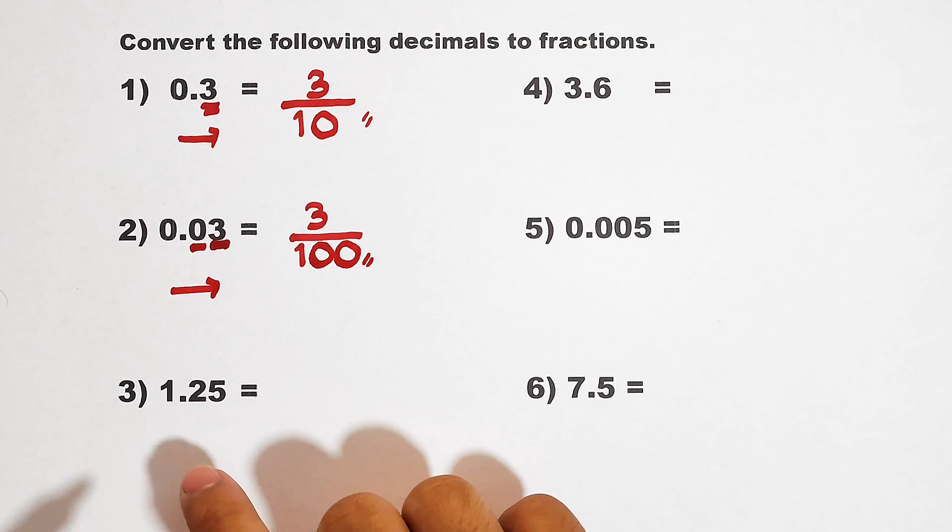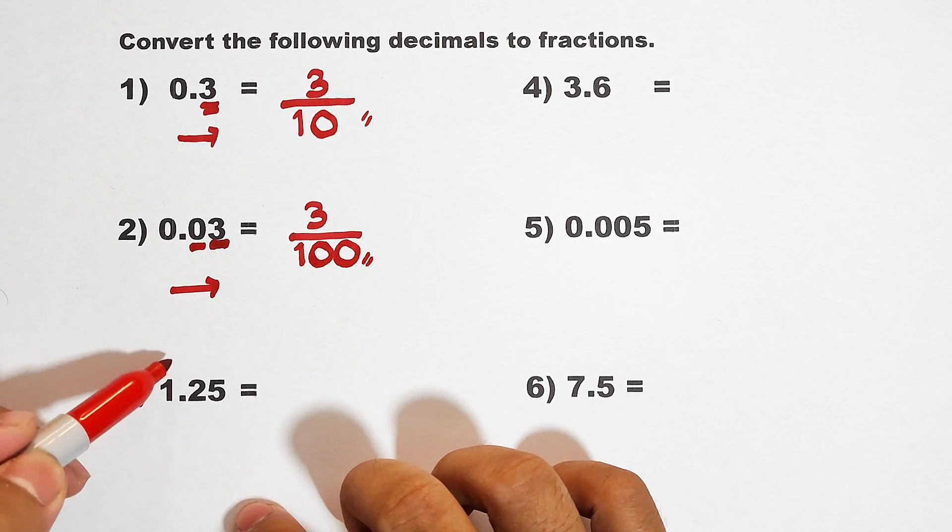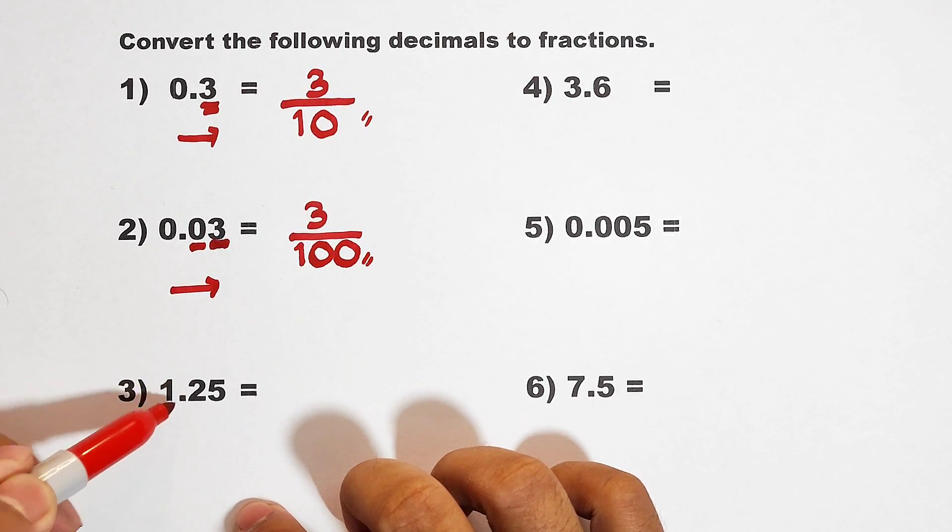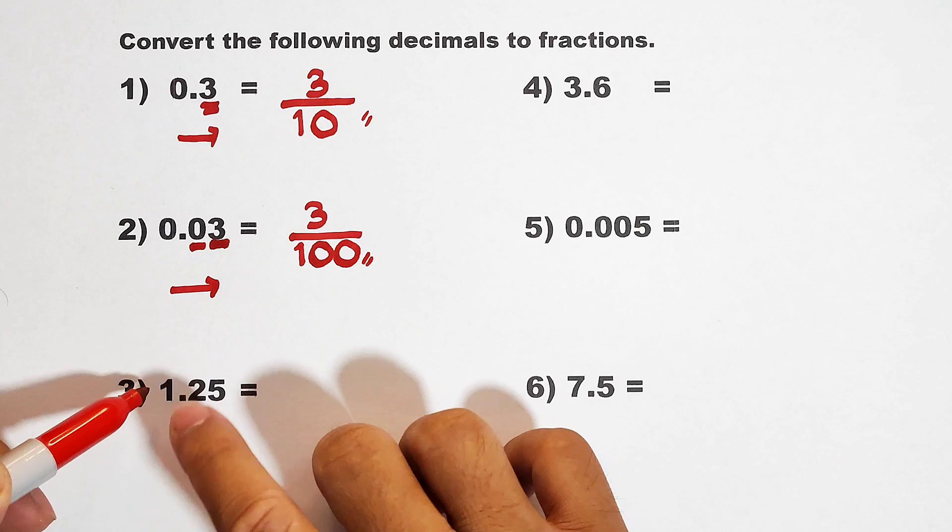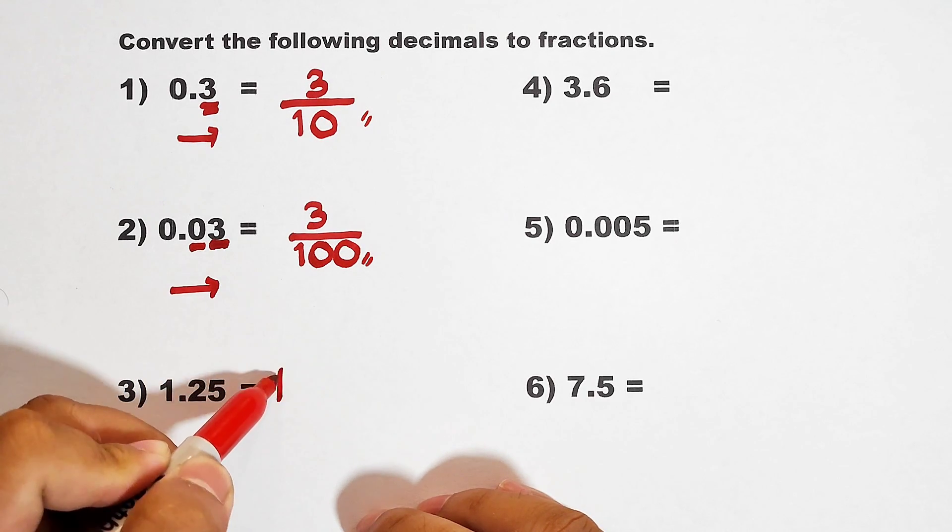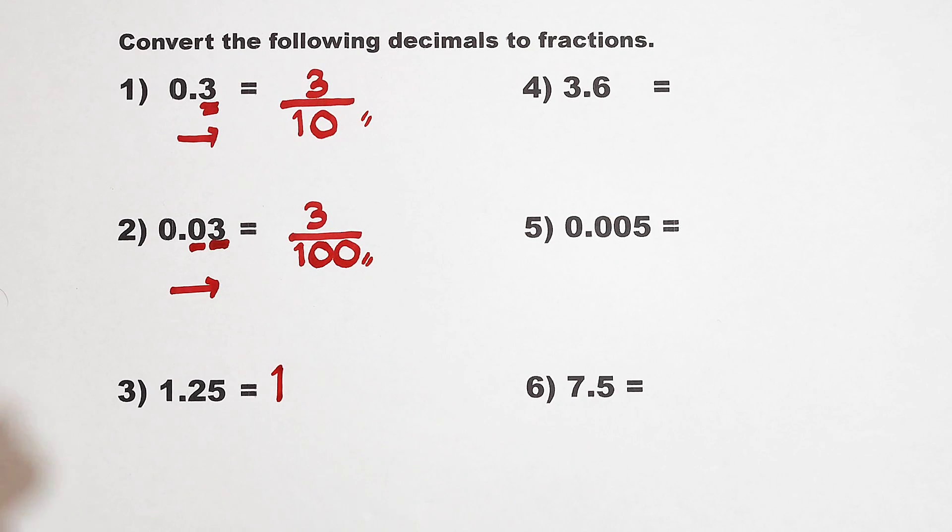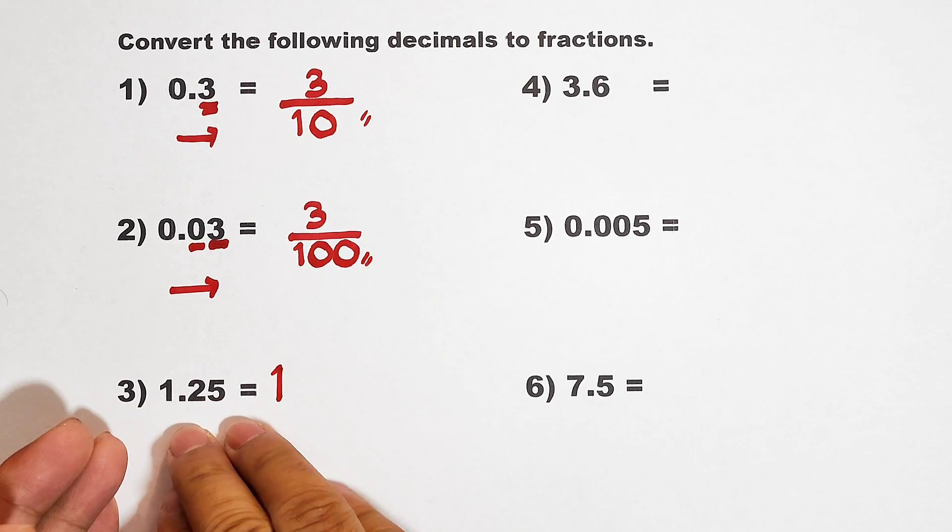Now let's continue with item number 3. In number 3, we are given 1.25. Here, we have a whole number, 1. So first, before converting the decimal, this whole number must be put here as a whole number. In shortcut, the equivalent of this one is a mixed number.